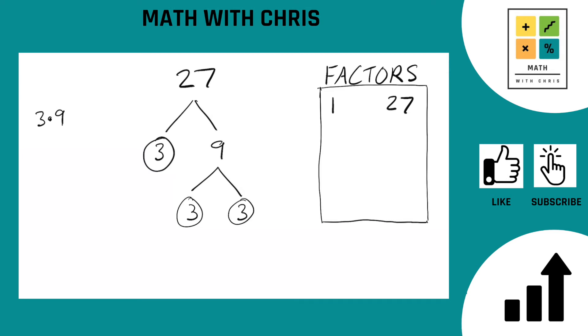We got 3 3's here. Again, if you go down any branch of your tree, we're now ending at a circled prime number, meaning we're done with the tree.